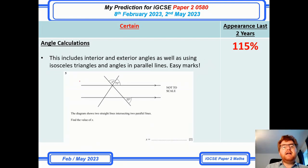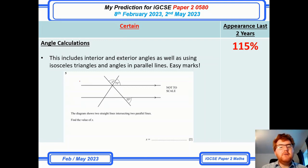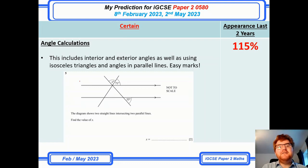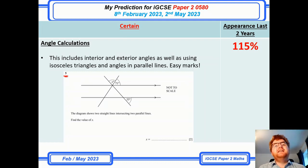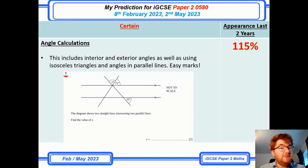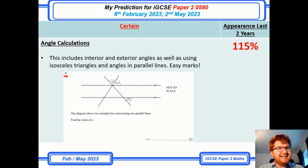And angle calculations — this includes exterior and interior angles as well as angles in parallel lines, just like the question in front of you. At the easy end you'd be working out angles using alternate, corresponding, and interior angles. At the harder end they'll bring in interior and exterior angles and start putting some algebra in there as well. If you look through the November 2022 papers you'll see that's the style of question they like to do.